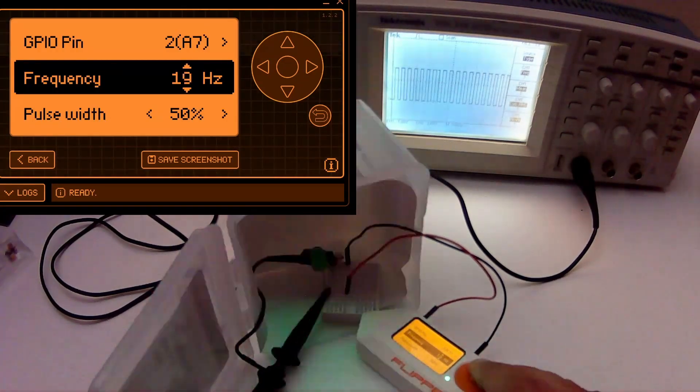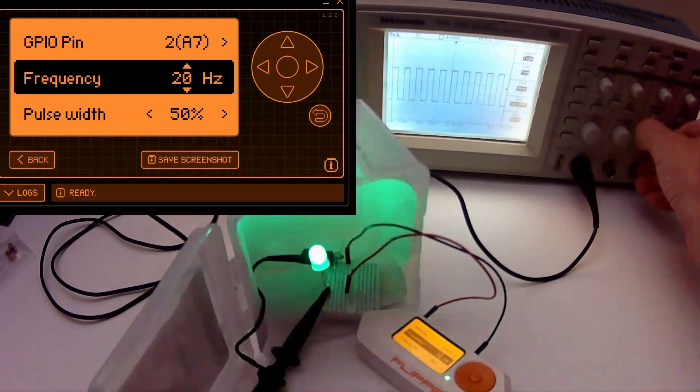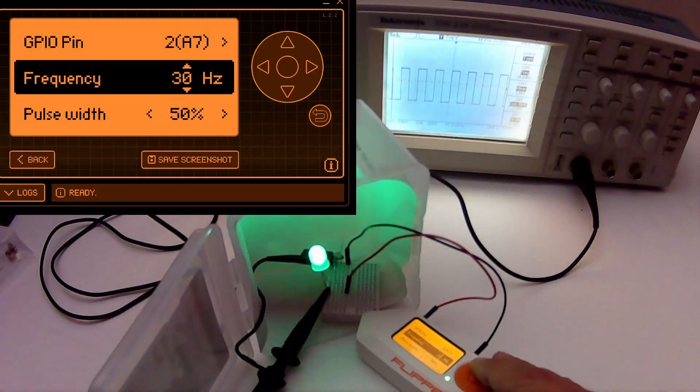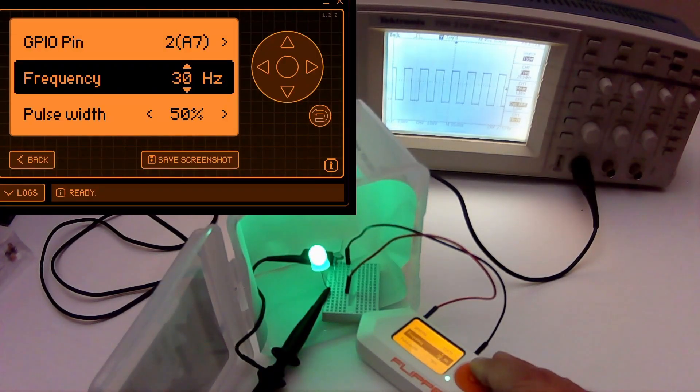We'll increase it up to 20 times a second. Now we're blinking 30 times a second. I'm filming at 30 frames per second so you can't see the light blinking but I see it blinking.